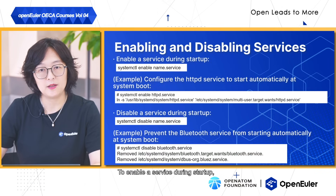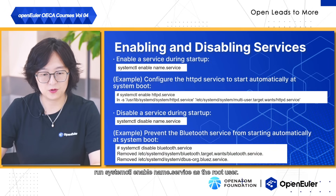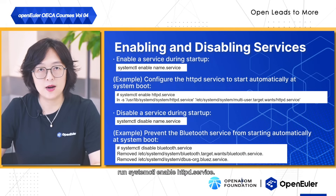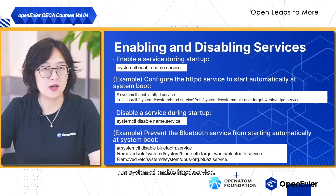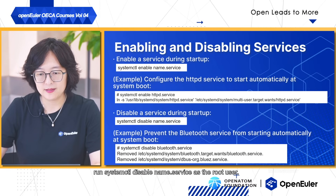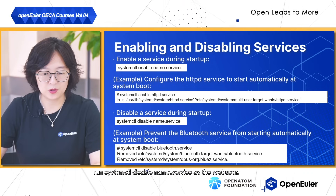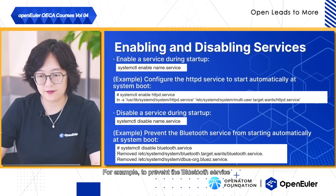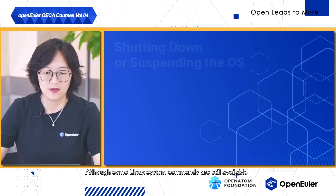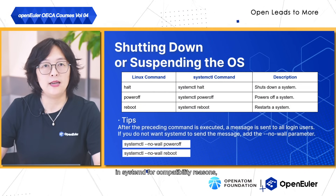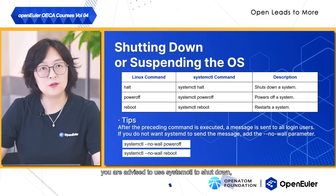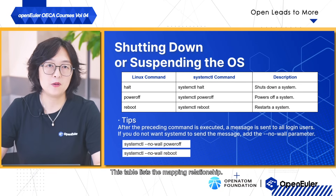To enable a service during startup, run systemctl enable name.service as the root user — for example, systemctl enable httpd.service to set it to start automatically at boot. To disable a service from starting at boot, run systemctl disable name.service — for example, systemctl disable bluetooth.service. You are advised to use systemctl to shut down, restart, and hibernate a system.